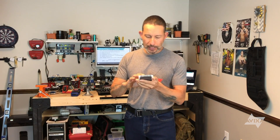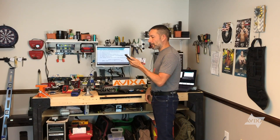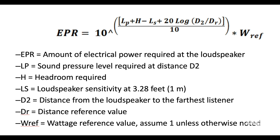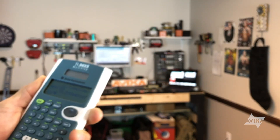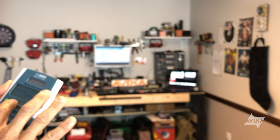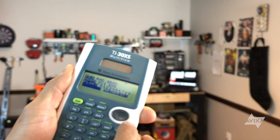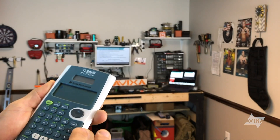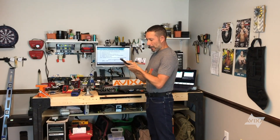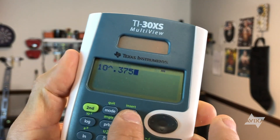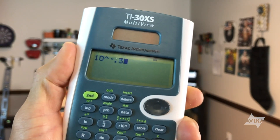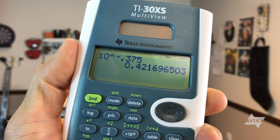Divided by 10, I get negative 0.375. So I want to go 10 to the power of negative 0.375. Pulling up my calculator — 10 to the power of negative 0.375 gives me 0.42169, et cetera.